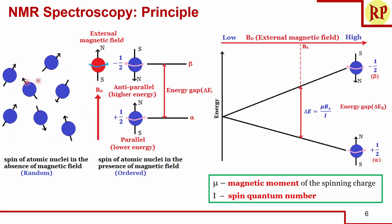Nuclei are randomly oriented in the absence of a magnetic field. But when an external magnetic field is applied, they orient either parallel or anti-parallel to it. The parallel spin is represented as plus half, and the anti-parallel as minus half. The anti-parallel orientation has higher energy than the parallel. The energy gap between these two states varies with the external magnetic field — the stronger the field, the larger the energy gap.